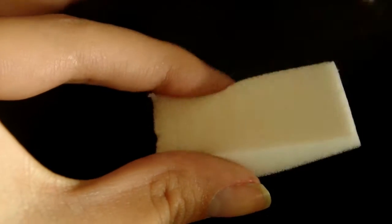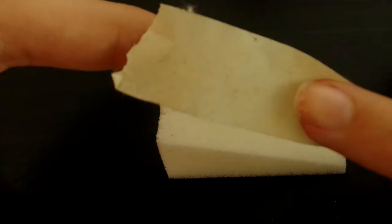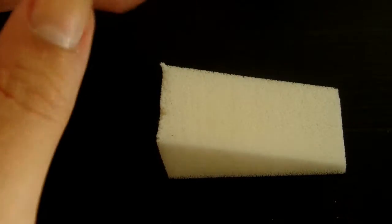And then just going over the sponge. Now this really does make a huge difference. It'll get any kind of loose fibers off the sponge, so it's prepped to put the color on.